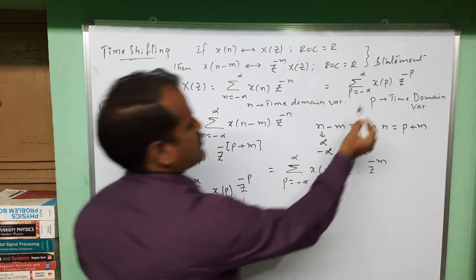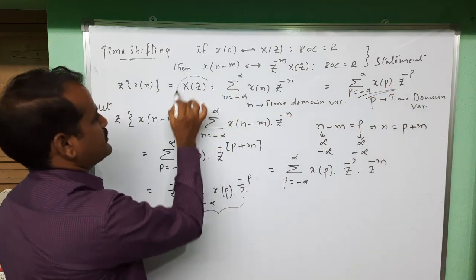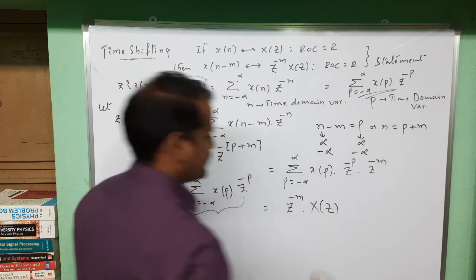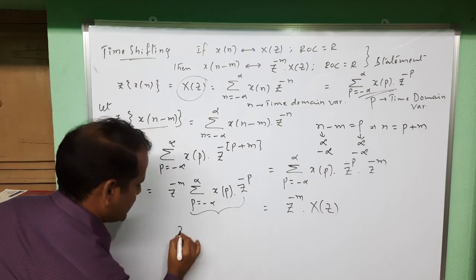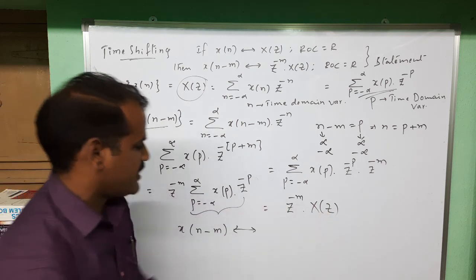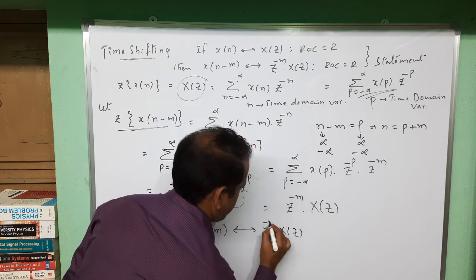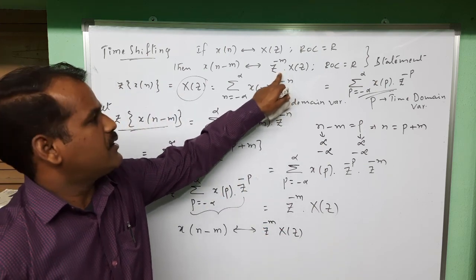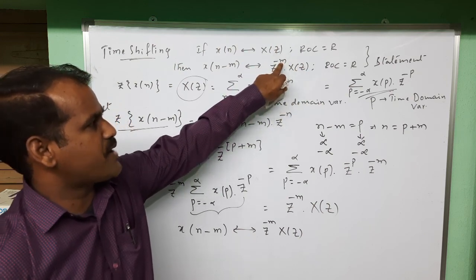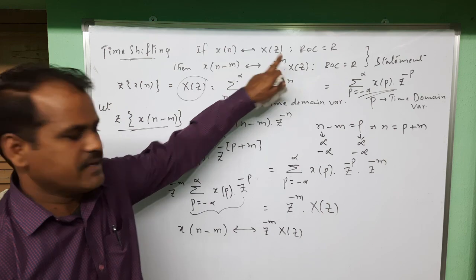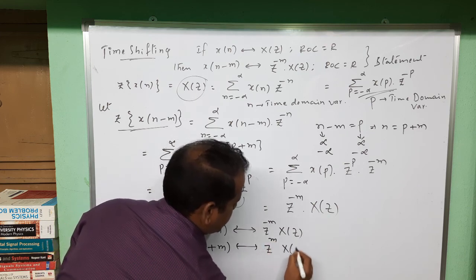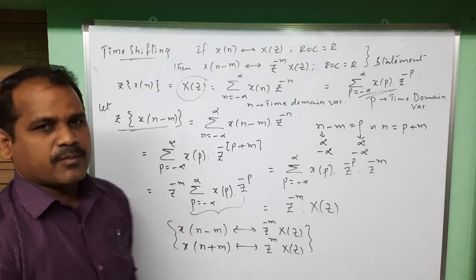The remaining summation is nothing but X(z). So we finally get z^(-m) X(z). This confirms that the Z-transform of x(n-m) equals z^(-m) X(z). This is the time-shifting property: the time-shifted signal x(n-m) has Z-transform equal to X(z) multiplied by z^(-m). Similarly, the Z-transform of x(n+m) would give z^(+m) X(z). This completes the proof of the time-shifting property. Thank you.